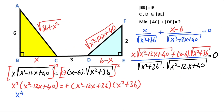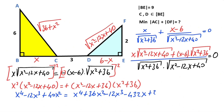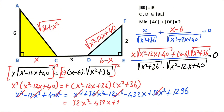Expanding: x to the power of 4 minus 12x cubed plus 40x squared equals x to the power of 4 plus 36x squared minus 12x cubed minus 432x plus 36x squared plus 1296. Notice that the x to the power of 4 terms and the 12x cubed terms cancel. So 36x squared plus 36x squared minus 40x squared equals 32x squared, giving 32x squared minus 432x plus 1296 equals zero.